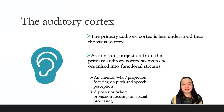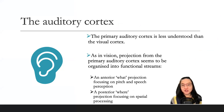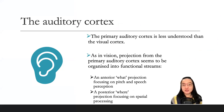The auditory cortex. The primary auditory cortex is less well understood than the visual cortex. As in vision, projections from the primary auditory cortex seem to be organized into functional streams: an anterior 'what' projection focusing on pitch and speech perception, and a posterior 'where' projection focusing on spatial processing.